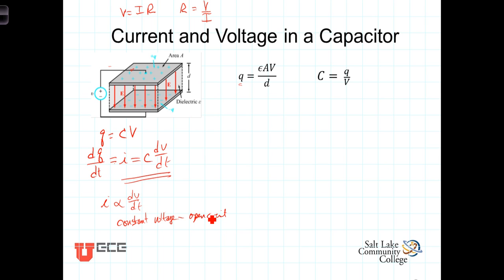The second observation is that you can't instantaneously change the voltage on a capacitor. What does that mean? Well, if we write it in terms of its differential form, delta V per delta t, an instantaneous change in voltage would mean that you would have some finite delta V in zero seconds.